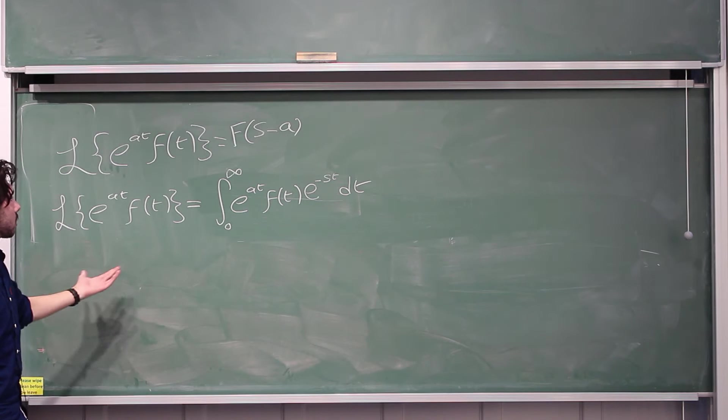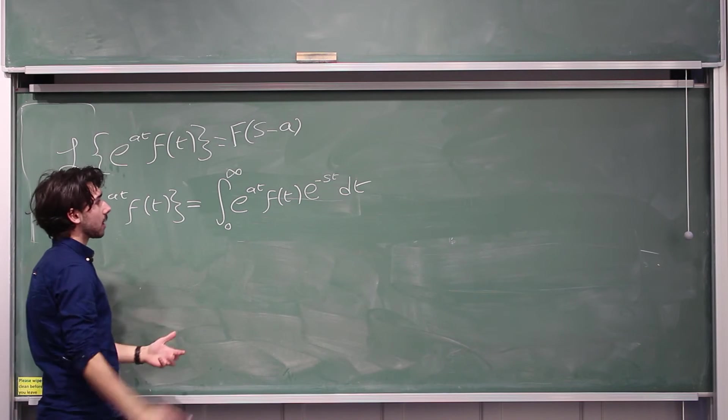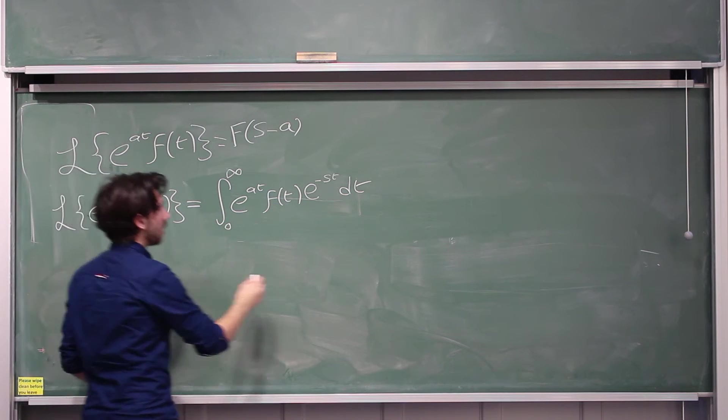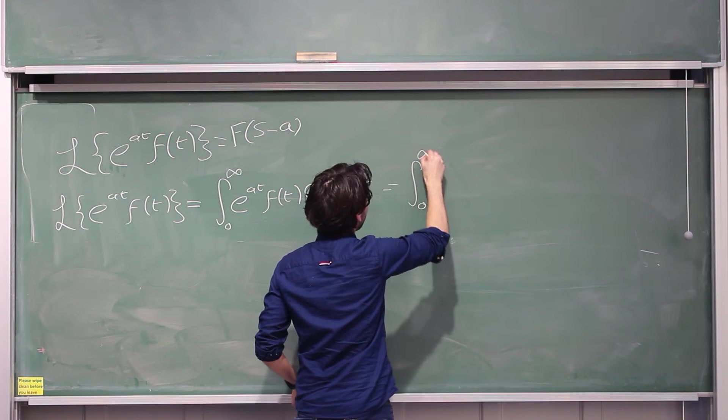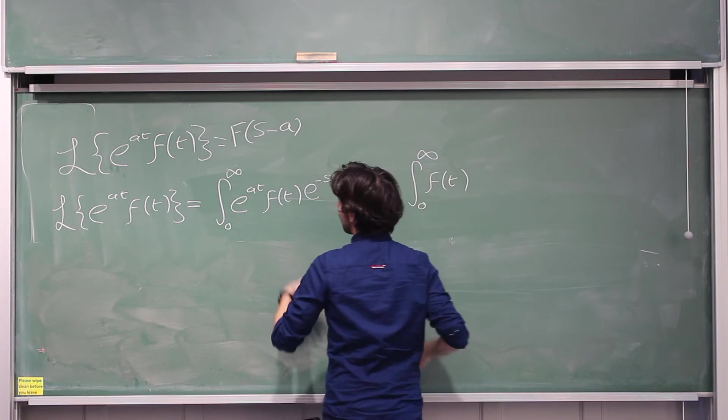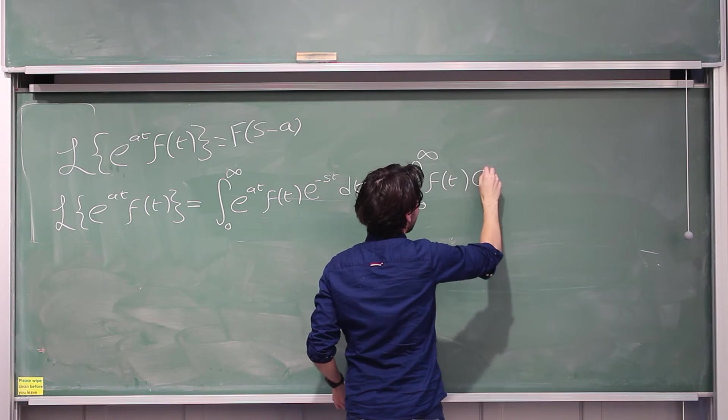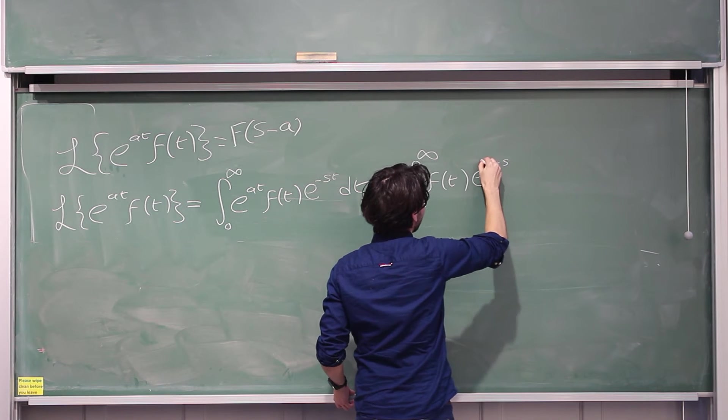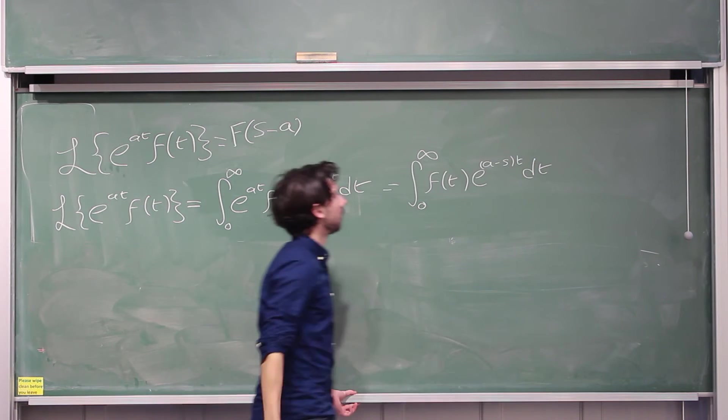So this is just the natural thing, it's just using the Laplace transform definition. But as you can probably piece it together, let's go over here, this is equal to the integral from zero to infinity of f of t, and then we can combine e to the at and e to the minus st and write that as e to the a minus s in brackets t dt, like that.